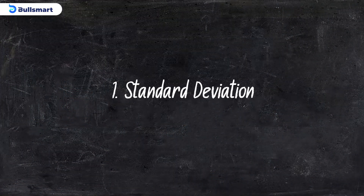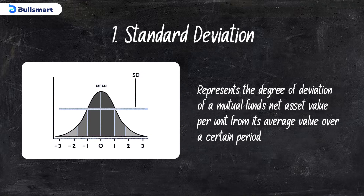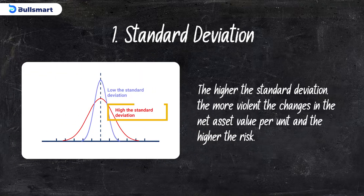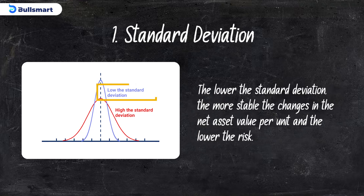Number one: the standard deviation. It represents the degree of deviation of a mutual fund's net asset value per unit from its average value over a certain period. The higher the standard deviation, the more violent the changes in the net asset value per unit and the higher the risk. The lower the standard deviation, the more stable the changes in the net asset value per unit and the lower the risk.